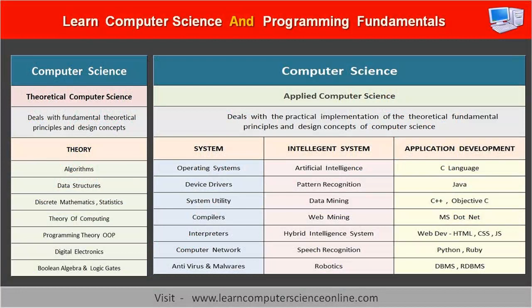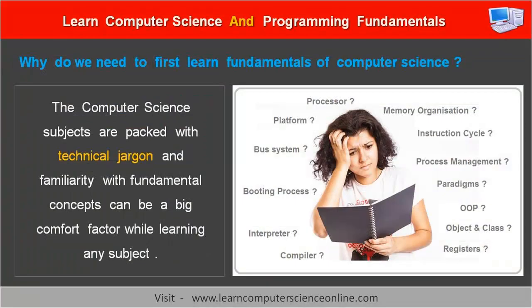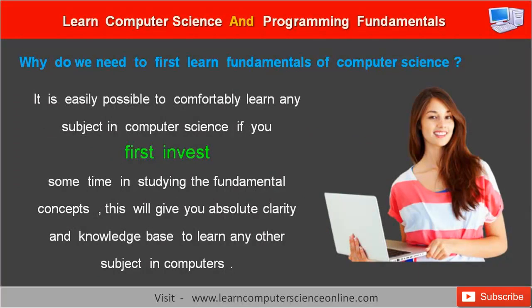The study of computer science and programming involves a good understanding of both the fundamental theoretical concepts as well as the practical knowledge. The scope of the computer science and programming fields is vast and full of technical jargon. This can be a big challenge for many students who do not have clarity about the fundamental concepts. Therefore, students armed with the knowledge of fundamental concepts find computer science subjects relatively very easy and can easily cope up.